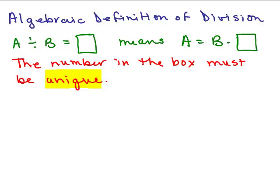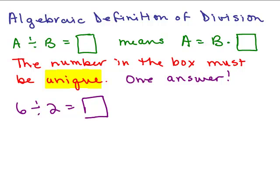We're going to go on to how to divide with zero. But first, we're going to talk about the algebraic definition of division. If you've never had algebra, this might be a little bit tricky, but just try to catch on. Division — what's it really mean? A divided by B — so those are just numbers like six divided by two. We say there's some answer that that's going to be, and it means this other equation would have to be true: A would have to equal B times what's in the box, and the number in the box must be unique — we want one answer. When you do a division, there can only be one answer.